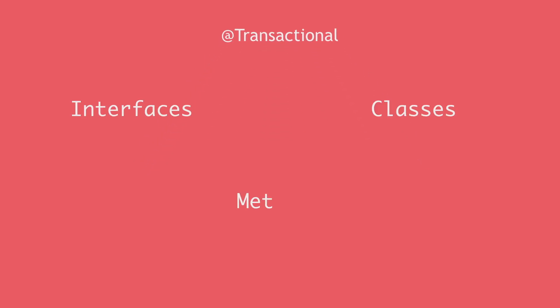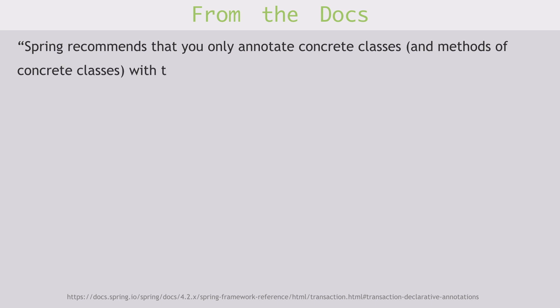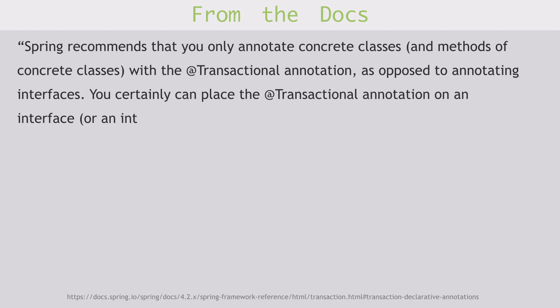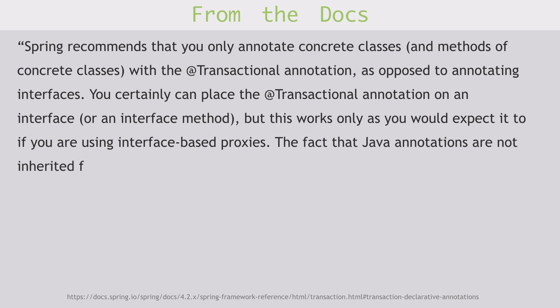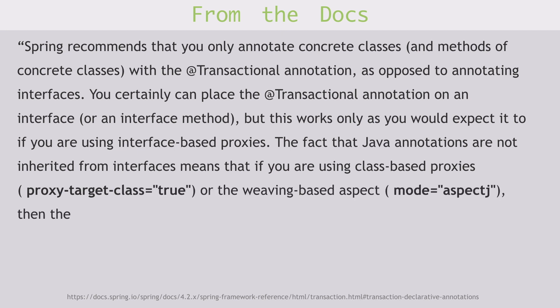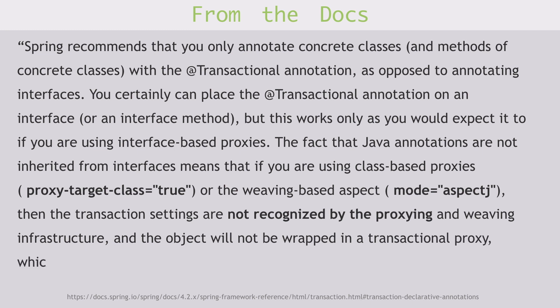The @Transactional annotation can be placed on interfaces, classes, or both class and interface methods. But Spring recommends that you only annotate concrete classes and methods of concrete classes with @Transactional, as opposed to annotating interfaces. You can place @Transactional on an interface or interface method, but this works only if you are using interface-based proxies. Because Java annotations are not inherited from interfaces, if you are using class-based proxies (proxy-target-class set to true) or the weaving-based aspect mode set to AspectJ, the transaction settings will not be recognized and the object will not be wrapped in a transactional proxy.